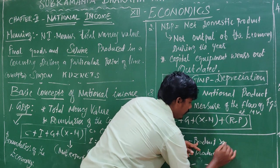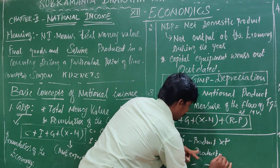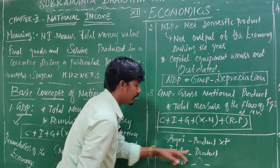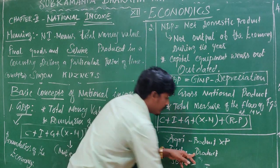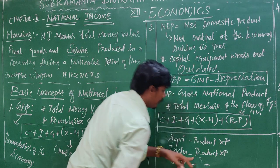For each sector, you multiply the output by market prices. Agricultural sector output multiplied by market prices. Industrial sector output multiplied by market prices.